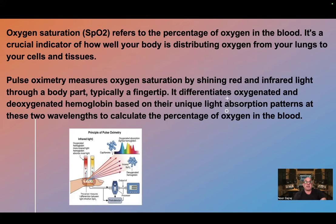Pulse oximetry measures oxygen saturation by shining red and infrared light through a body part, typically a fingertip. It differentiates oxygenated and deoxygenated hemoglobin based on their unique light absorption patterns at these two wavelengths to calculate the percentage of oxygen in the blood.